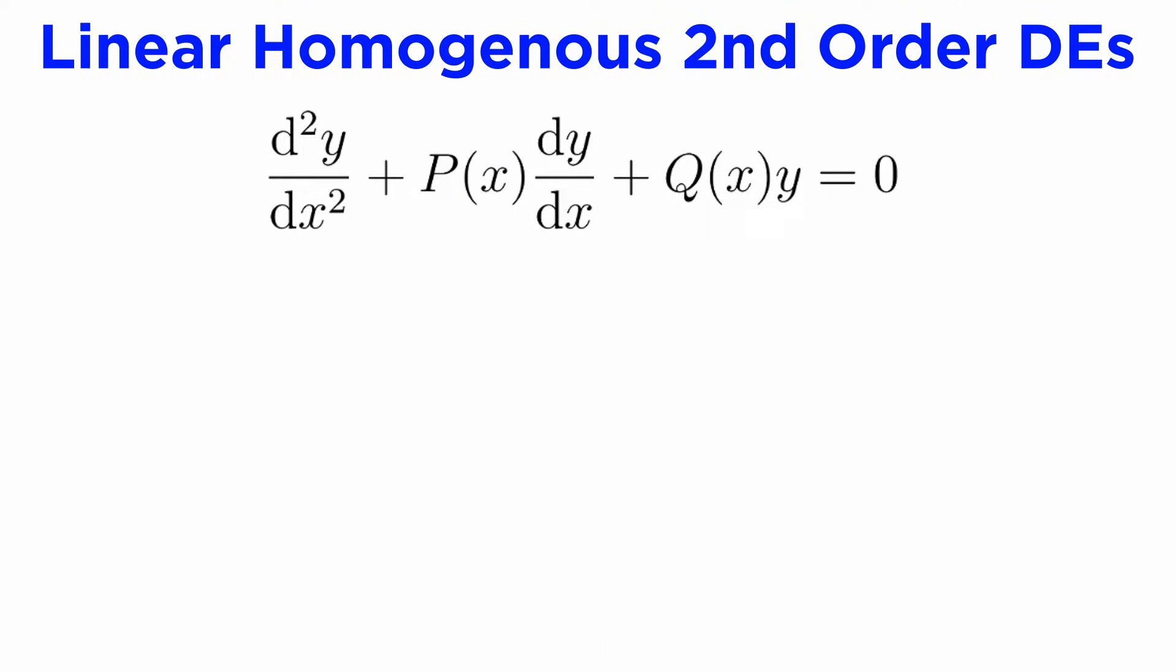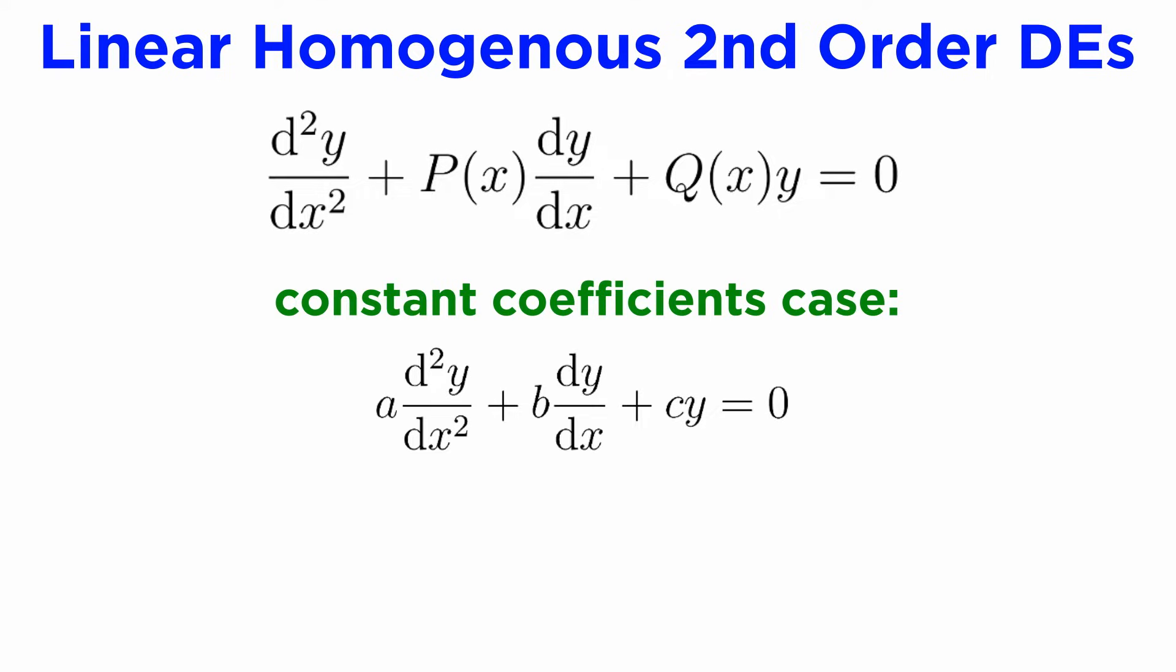Firstly, let's define what is meant by a linear, homogenous, second-order differential equation. This will be any DE of the general form d squared y dx squared plus P of x times dy dx plus Q of x times y equals zero. But we're actually going to restrict this form a little more, and we're going to look at the constant coefficients case.